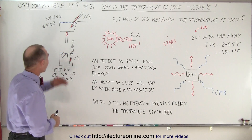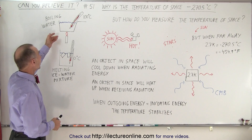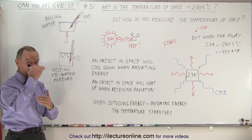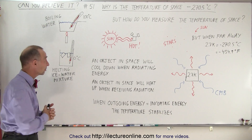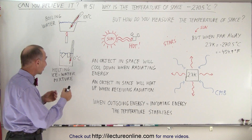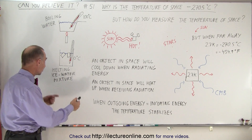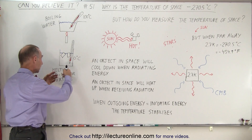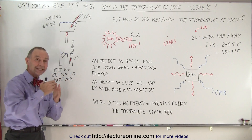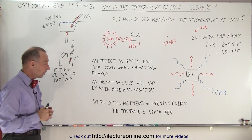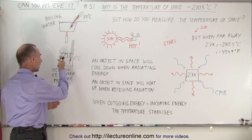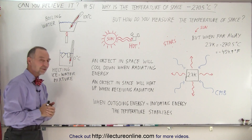Let's say we have a boiling pot of water. We can stick a thermometer in there and read that it's indeed at 100 degrees Celsius. And then if we take the same thermometer and stick it in a cup that has a mixture of melting ice and water, we'll find that the temperature will be zero degrees Celsius.